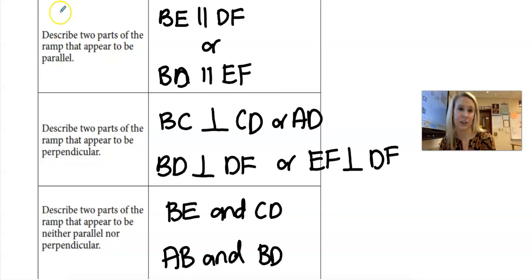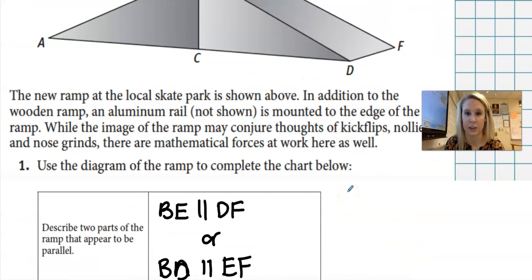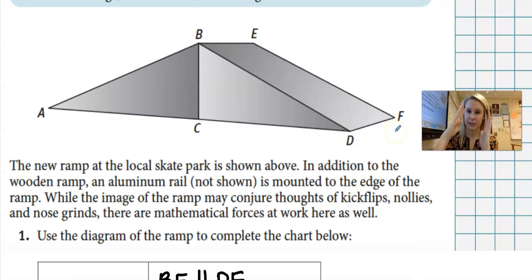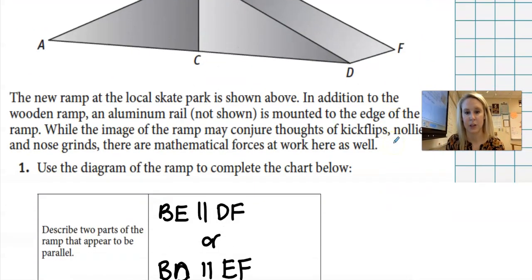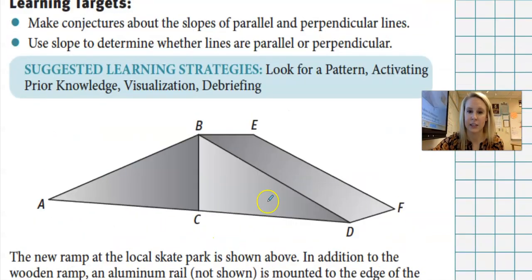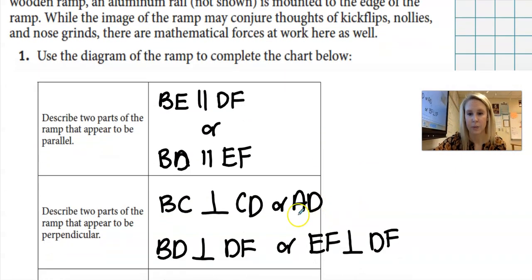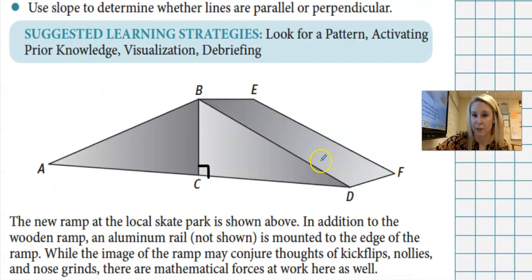Here's some things I found. Again, you can have a different answer. You can have them in a different order. But the top of the ramp and the bottom of the ramp, so BE and DF seem to be parallel, as well as BD and EF. So those lines are parallel. They look like they have the same slope, but they're not touching. Lines that appear to be perpendicular, I said BC and CD or AD. So BC and either the whole line or part of the line look to be perpendicular. They look to form a right angle.